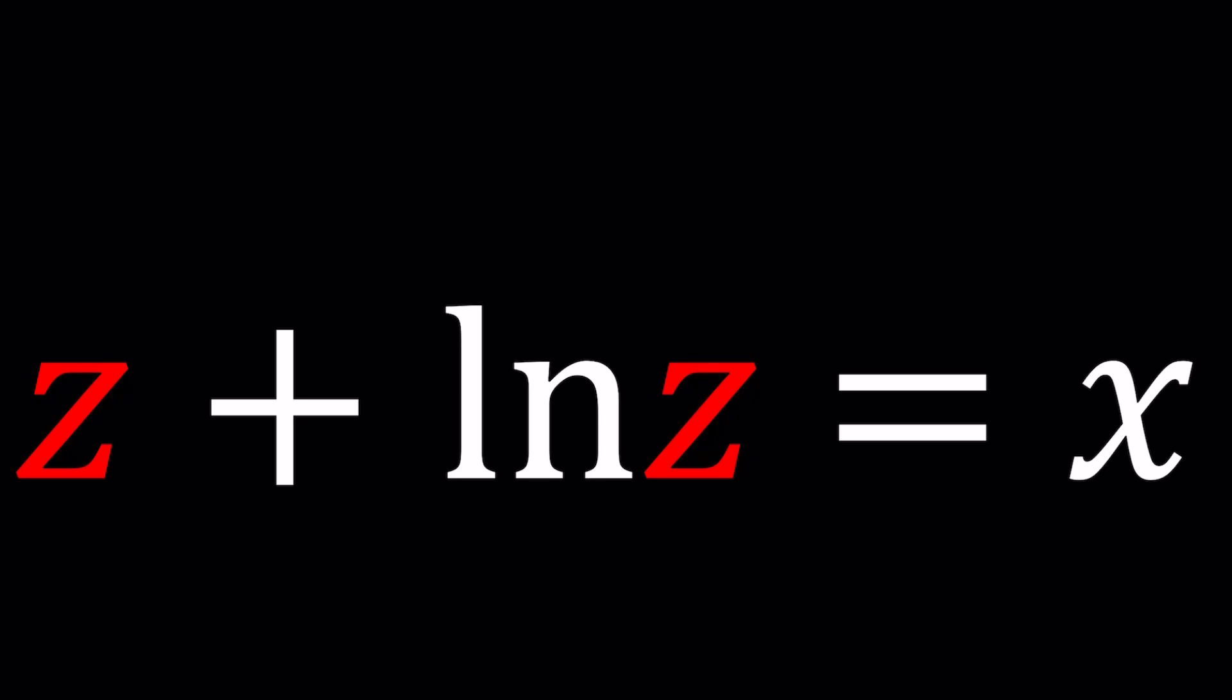Anyways, so we have this equation z plus ln z equals x, and we're going to solve for z. To be able to solve for z, obviously, we're going to use a non-standard approach, because this is a non-standard equation. What do I mean by that? We have a z, which is a polynomial, ln z is logarithmic. We mix them up, and that equals, to make matters worse,